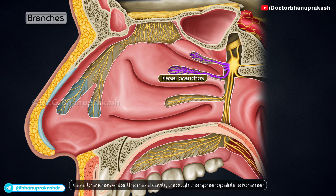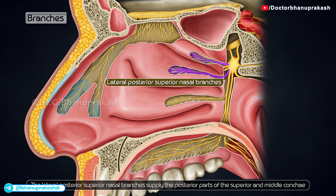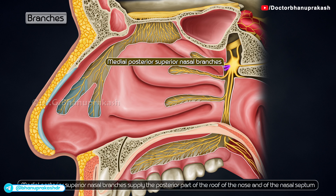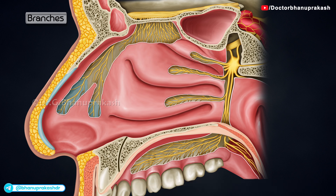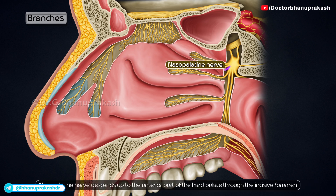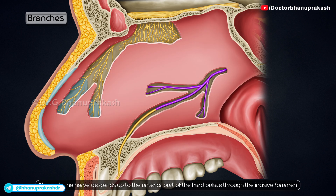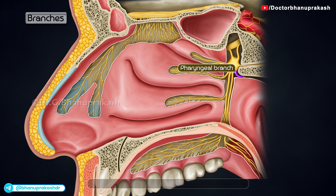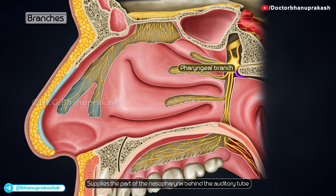Nasal branches enter the nasal cavity through the sphenopalatine foramen. The lateral posterior superior nasal branches supply the posterior parts of the superior and middle conchae. The medial posterior superior nasal branches supply the posterior part of the roof of the nose and of the nasal septum. The largest of these nerves is the nasopalatine nerve, which descends to the anterior part of the hard palate through the incisive foramen. The pharyngeal branch passes through the palatovaginal canal and supplies the part of the nasopharynx behind the auditory tube.